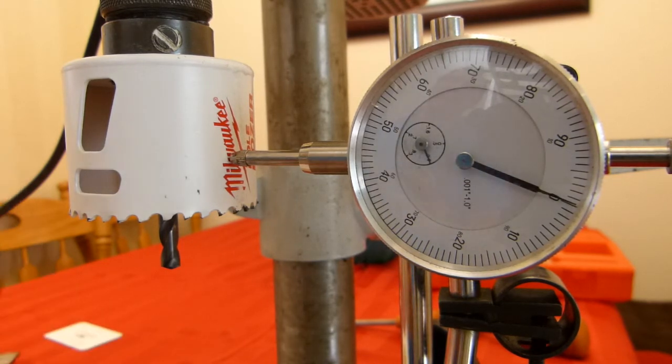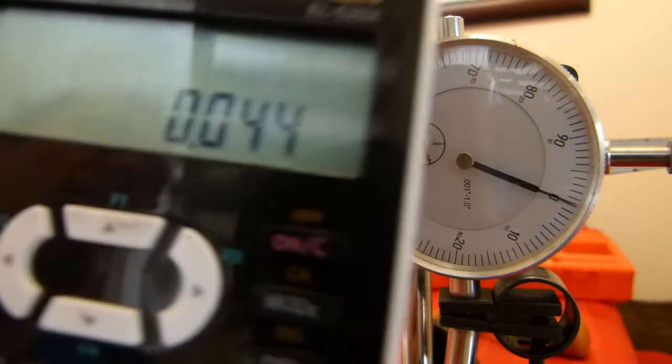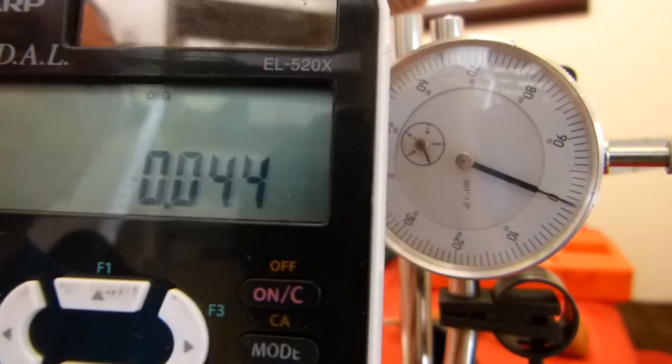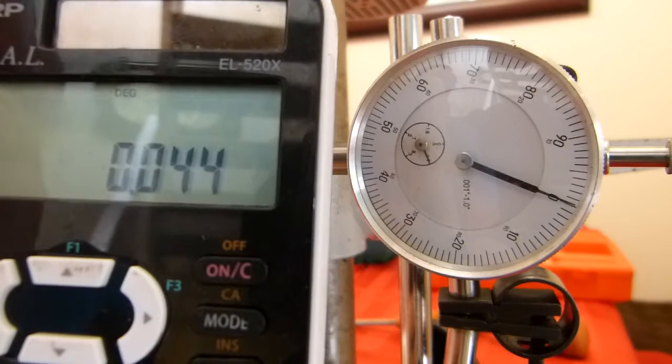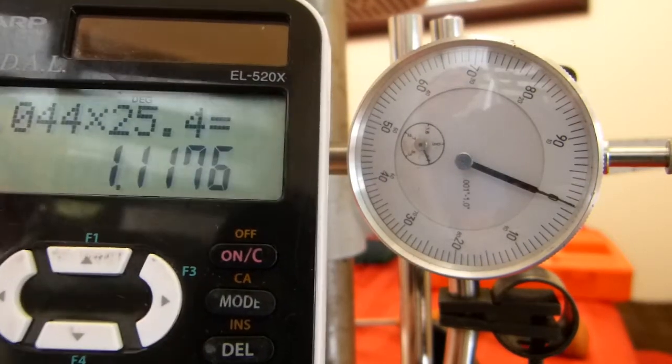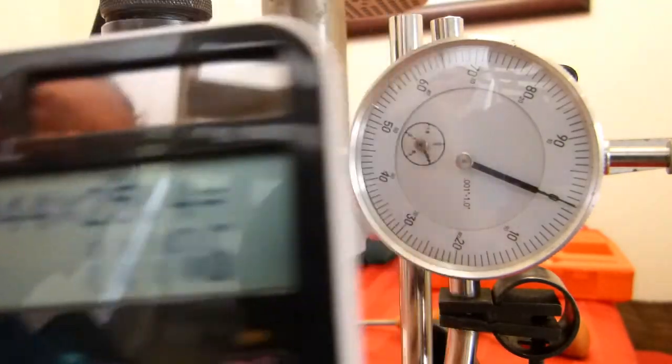Let's have this calculator here. We'll call it 44 thousandths of an inch out of circular. 35 plus nine, we'll go with that, 44. In terms of metric, let's times it by 25.4, that's 1.1 millimeter out.